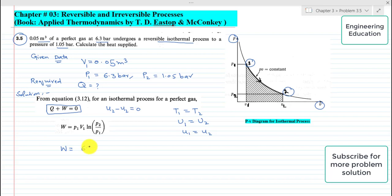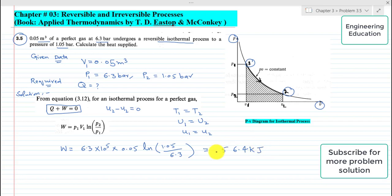P₁ is 6.3 bar, bar will be converted to Pascal so we multiply by 10⁵. V₁ is 0.05 m³, natural log of P₂, and P₂ is 1.05 bar, and P₁ is 6.3 bar. So simplifying this we get the value which is -56.4 kJ.